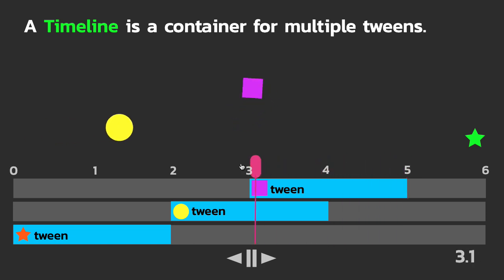As I'm scrubbing, you can see that the time is changing in the lower right, so I can jump to any time that I want, I can reverse from any time that I want, I can tell timelines to repeat, I can set repeat delays, and I have all these advanced controls over this group of tweens.